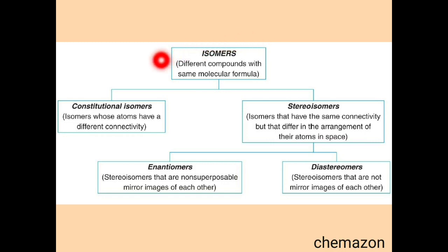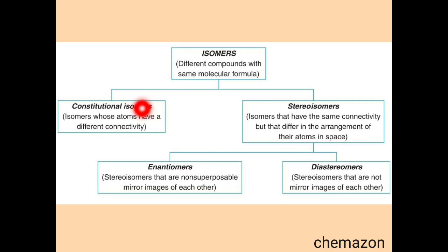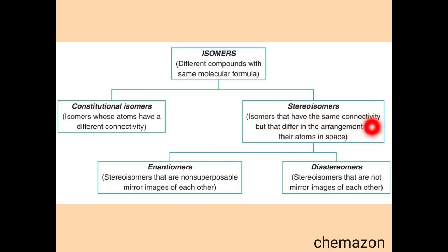For any two molecules to be called isomers, the very first criteria is that the compounds should have the same molecular formula. Then we move further to see the connectivity of the bonds with different groups. If in a molecule the bond connectivity and the atoms at each particular location are the same, then they are stereoisomers. If the bond connectivity is different, they are called constitutional isomers — stereoisomers have the same connectivity but differ in the arrangement of their atoms in space.